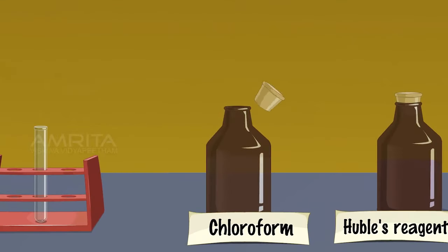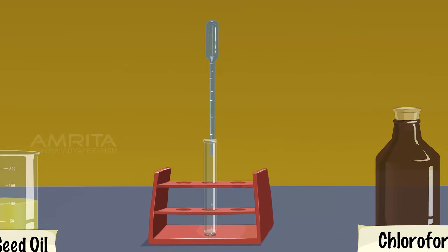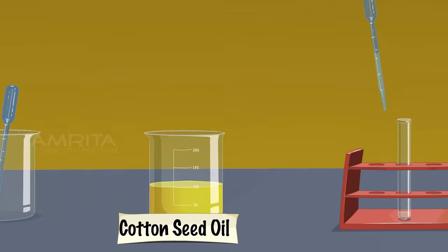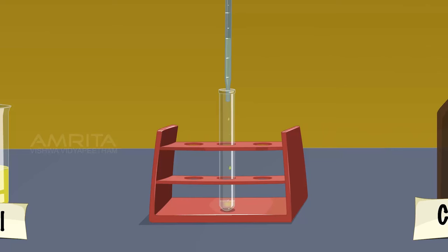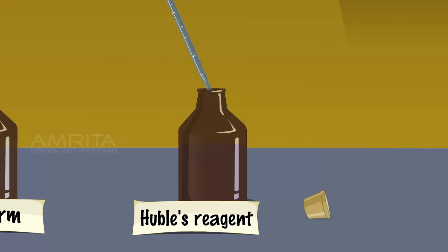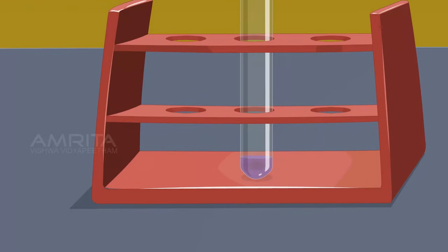Hübl's Test — Cotton Seed Oil. Using a dropper, take about 3 ml of chloroform in a test tube. Using another dropper, take a small quantity of cotton seed oil and add about 4 drops into the test tube. Shake the test tube well. Add about 3 drops of Hübl's reagent into the test tube containing the mixture of chloroform and cotton seed oil. The violet colour of iodine in the Hübl's reagent does not fade away, indicating that cotton seed oil is less unsaturated.